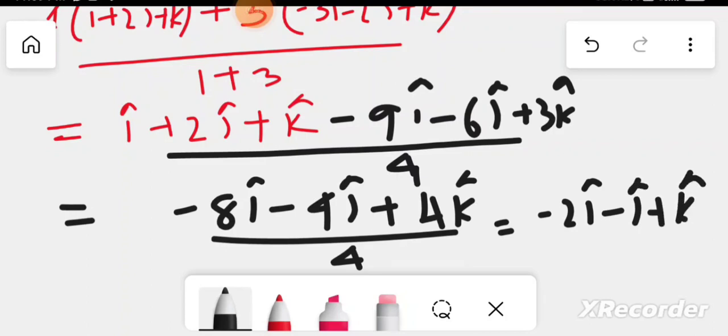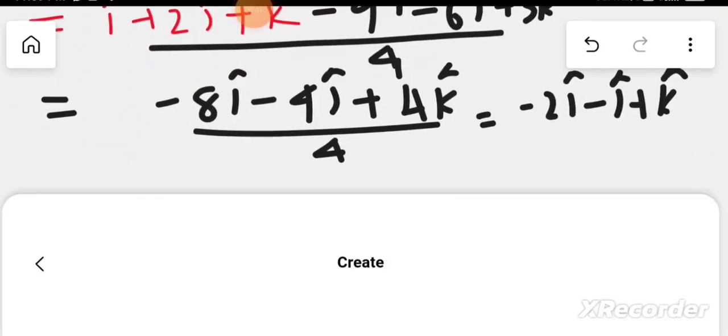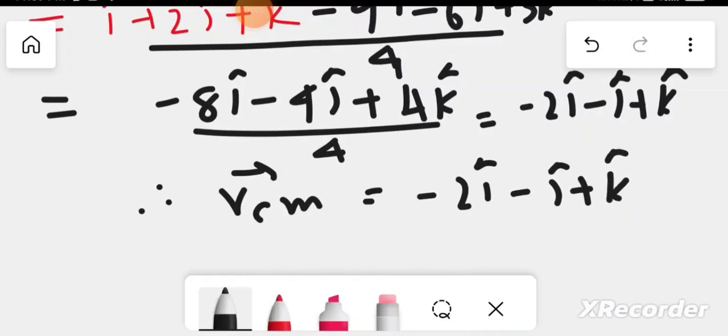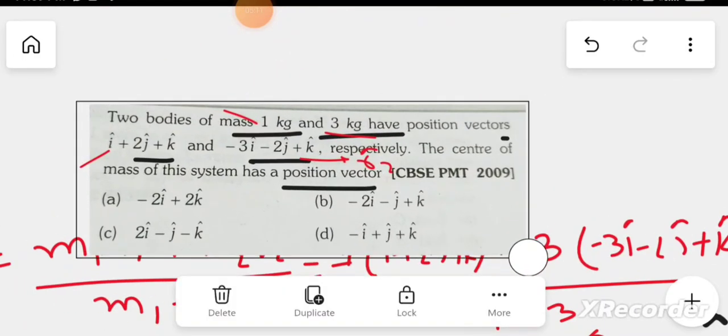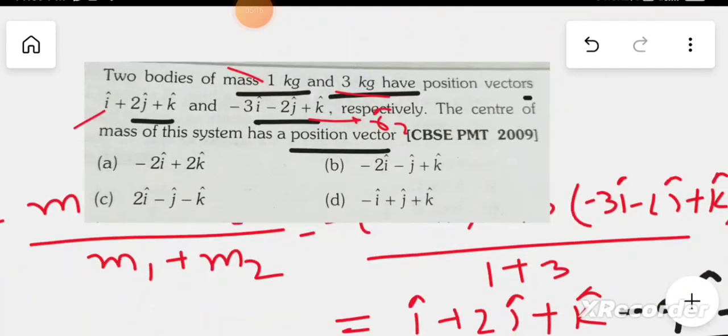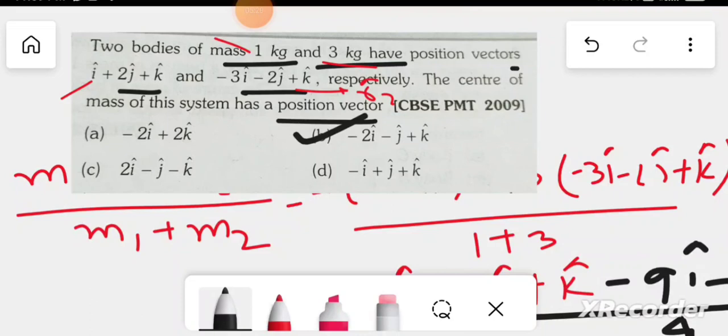So the center of mass position vector is minus 2i cap minus j cap plus k cap. The answer is B. B is the right answer. Okay, if you want to see the next one, please subscribe.